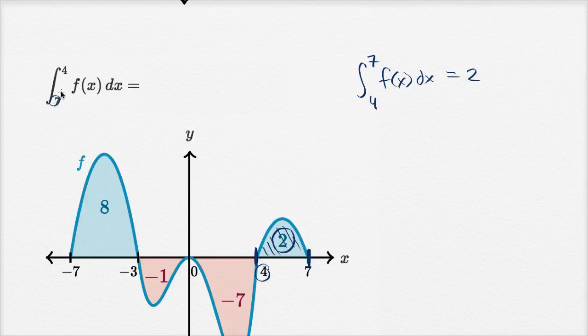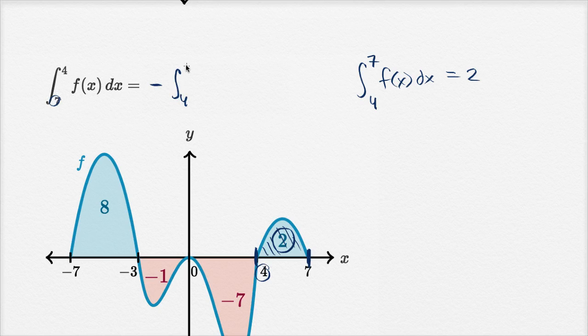So what about this, where we've switched it? Instead of going from four to seven, we're going from seven to four. Well the key realization is if you switch the bounds, and this is a key definite integral property, that's going to give you the negative value. So this is going to be equal to the negative of the integral from four to seven of f of x dx.